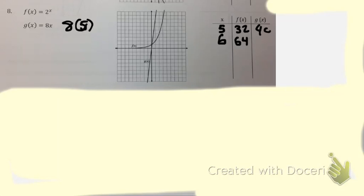So 40, and what is 8 times 6? 48. So g of x only had a rate of change of 8, while f of x had a rate of change of 32.